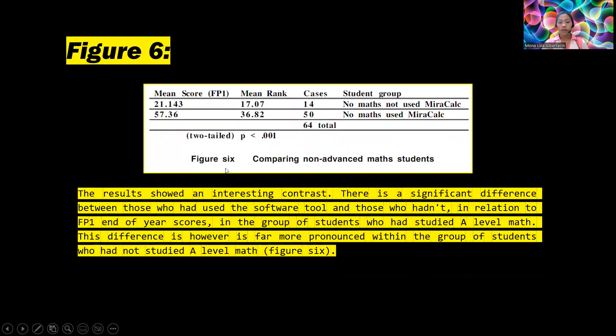For figure six, comparing non-advanced math students, the student groups are no math not used MiraCalc and no math used MiraCalc. For no math not used MiraCalc, the mean score is 21.143, mean rank 17.07, cases of 14. For no math used MiraCalc, the mean score is 57.36, mean rank 36.82, and cases of 50, a total of 64, with a p-value of less than 0.001.